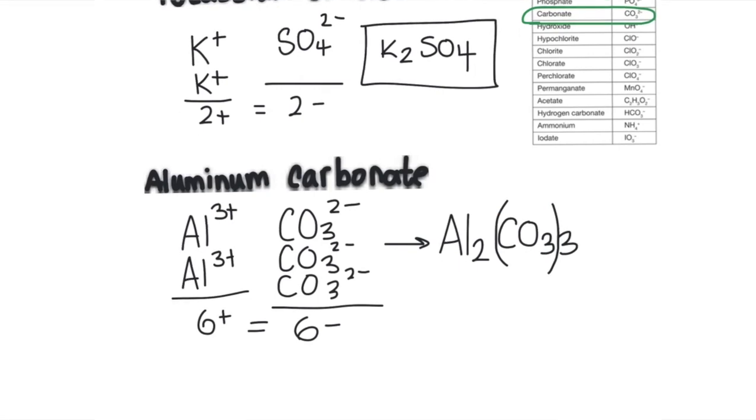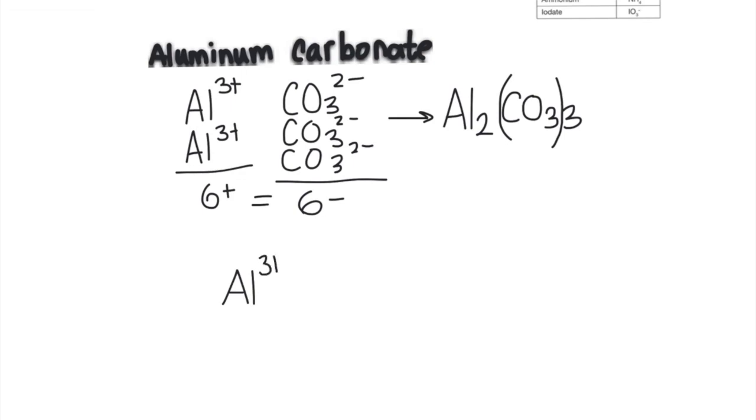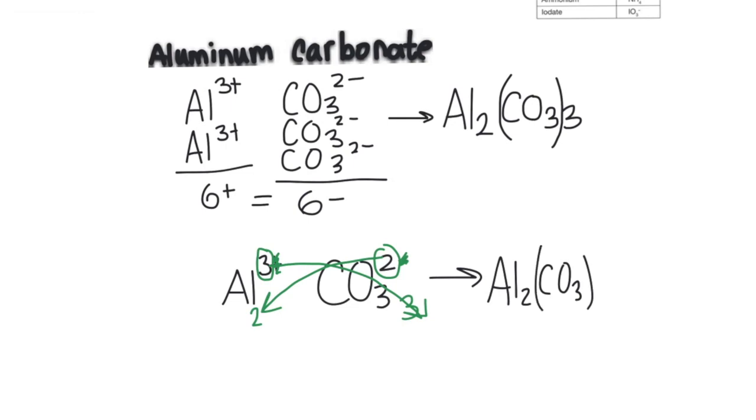What we do for the shortcut is we take our two ions with the charges, and we can take these numbers right here and cross them and bring them down to the bottom and they become the subscripts. This works almost every time. The two comes down and gets written down here with the aluminum, the three comes down and gets written down here with the carbonate. We get rid of those charges, those symbols. So we can rewrite this as Al2CO3, put it in parentheses, and then that three comes in that was up here. That's a little shortcut you can use that almost works every time.